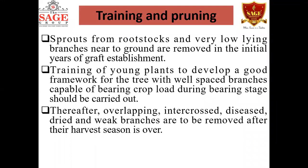For training and pruning: sprouts from the rootstock and very low-laying branches near to the ground are removed in the initial years of graft establishment. When planting a new graft, rootstock shoots need to be cut and removed. If new shoots are coming from the scion — which is the desired variety — those need to be maintained, while off-type rootstock shoots should be removed.